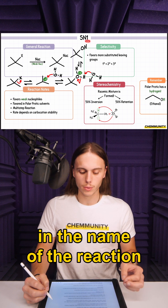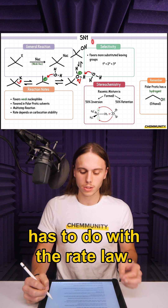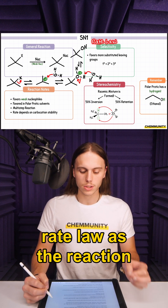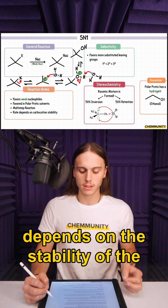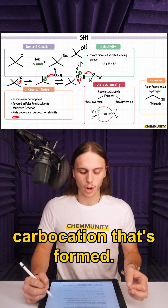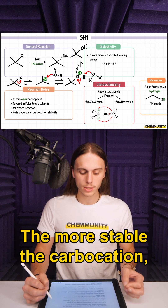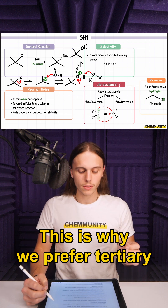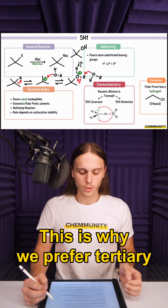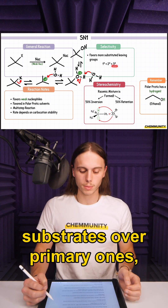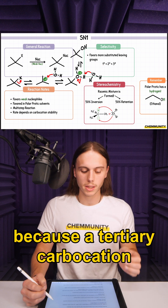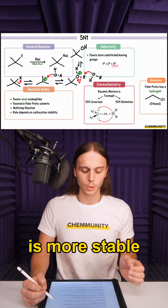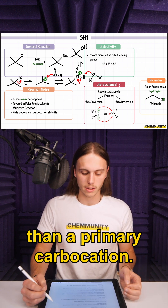The reason there's a 1 in the name of the reaction has to do with the rate law. It will be a first-order rate law, as the reaction depends on the stability of the carbocation that's formed. The more stable the carbocation, the faster the reaction. This is why we prefer tertiary substrates over primary ones, because a tertiary carbocation is more stable than a primary carbocation.